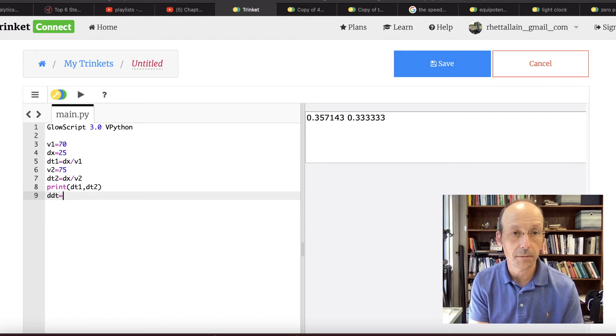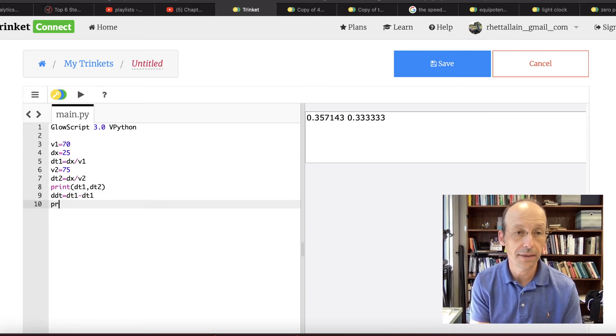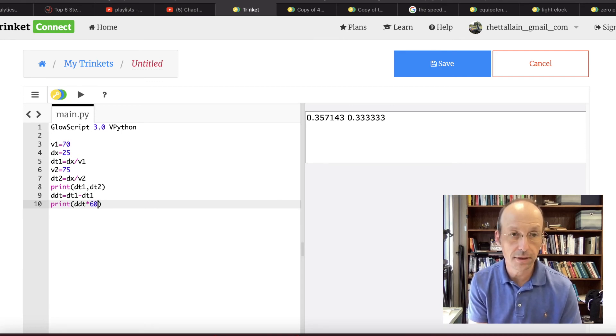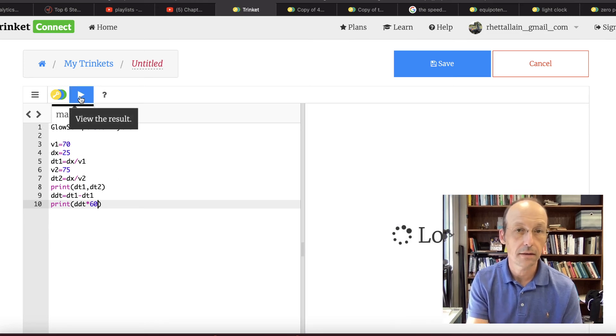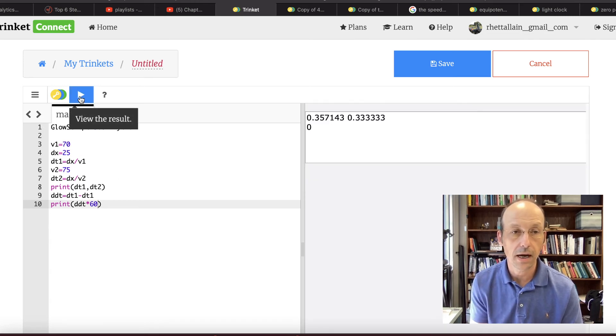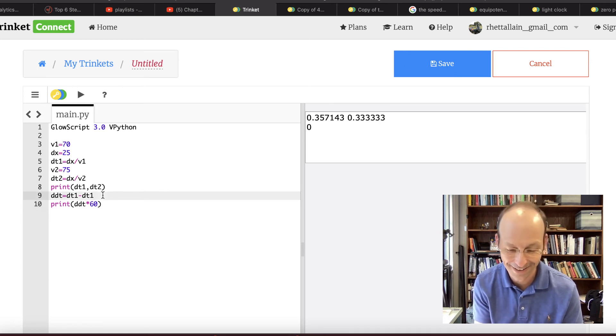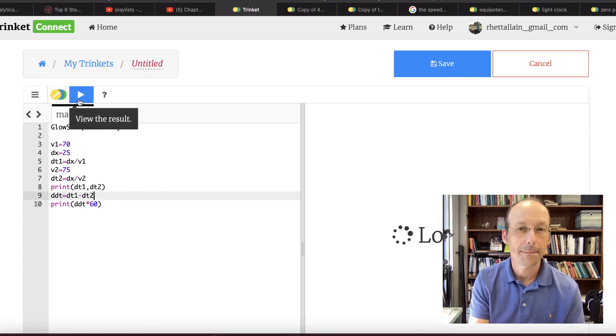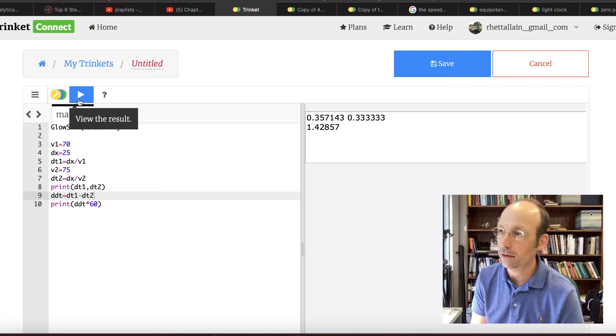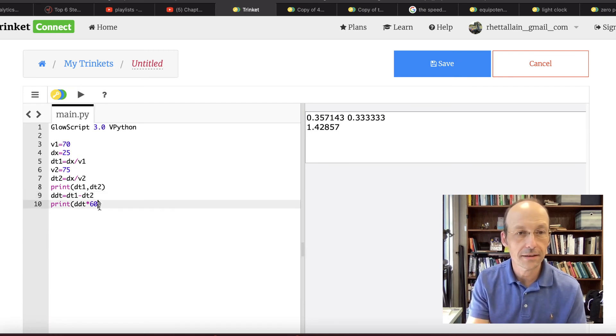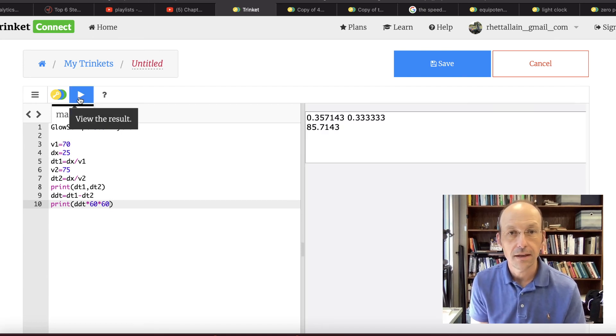ddt is going to be dt1 minus dt2. And let's print that in minutes. So let's print ddt. Now I need to convert it to minutes. So there are 60 minutes in one hour. Right. So that's just that. So one, you save 1.42 minutes. Maybe we should convert that to seconds. 85 seconds.